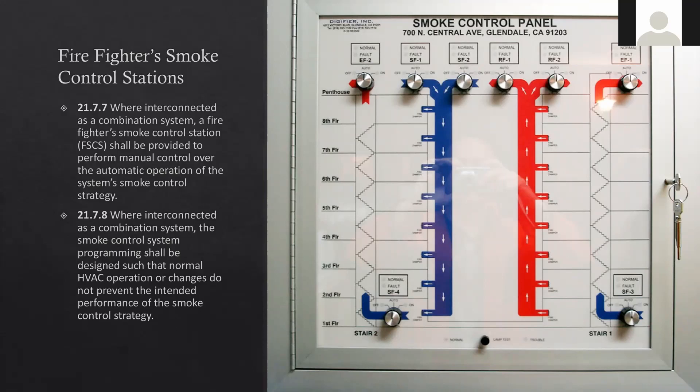Question from Ramsey: does the smoke control panel hook up the same way, or is there a specific way to interconnect it? Typically there'll be two relays — one shut-off relay and one command-on relay — and they'll still both be controlled by the SLC. You'll just have two relays for that air handler unit instead of one. Other than that, it's still pretty much the same as far as the physical install goes.